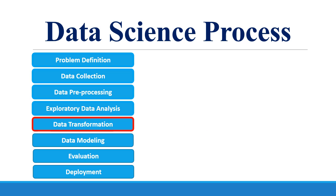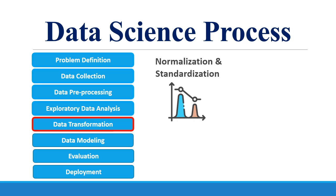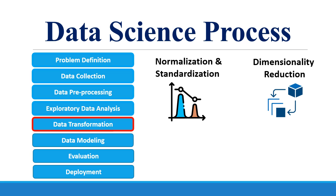The next step before feeding the data into a data science model is data transformation. When the features in the data set are not on the same scale, normalization is used. And when you want a mean of 0 and standardization of 1, then standardization is used. Sometimes we have a lot of features in the data set and do not know which features are important — in this case, dimensionality reduction algorithms are used to reduce the dimensionality of the data set.